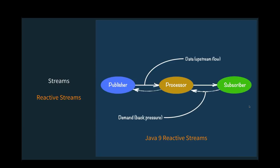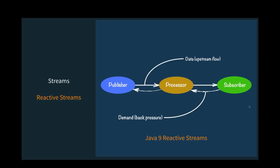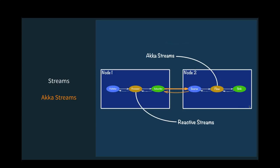With Java 9, reactive streams is a built-in feature with four new interfaces: a publisher, subscriber, and processor. ACA Streams is built on top of the reactive streams standard but adds a ton of functionality. The terminology differs slightly — in ACA Streams we have sources, sinks, and flows versus publisher, subscriber, and processor — but they do basically the same thing. Different implementations like RxJava and ACA Streams can interoperate because they follow the same standard.